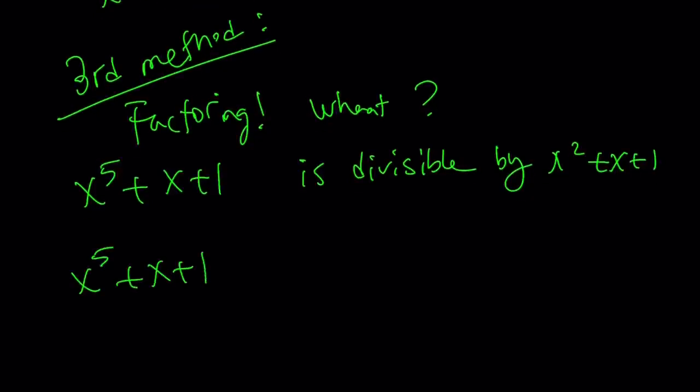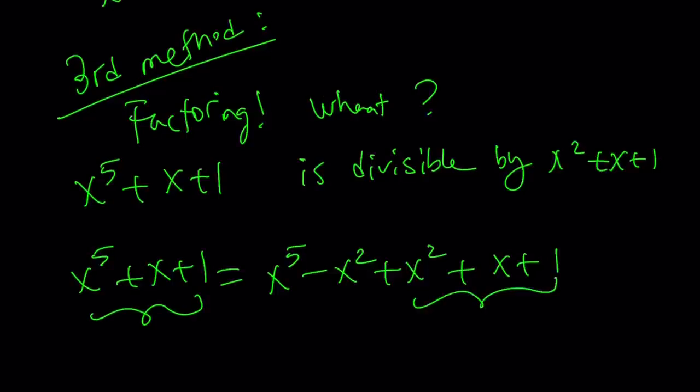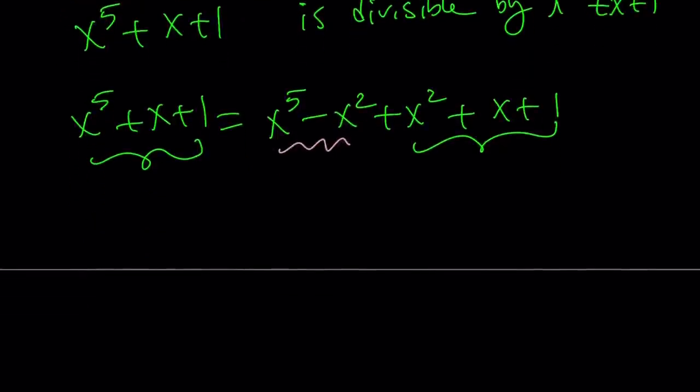Why don't we kind of try to break it down? So I'm going to write the x to the fifth plus x plus one as x to the fifth minus x squared plus x squared plus x plus one. So I'm going to use an old trick, but notice that this is divisible by x squared plus x plus one, and this is divisible by x squared plus x plus one because it is x squared plus x plus one. Therefore, by whatever the theorem is, I don't know, this is supposed to be divisible by that as well.